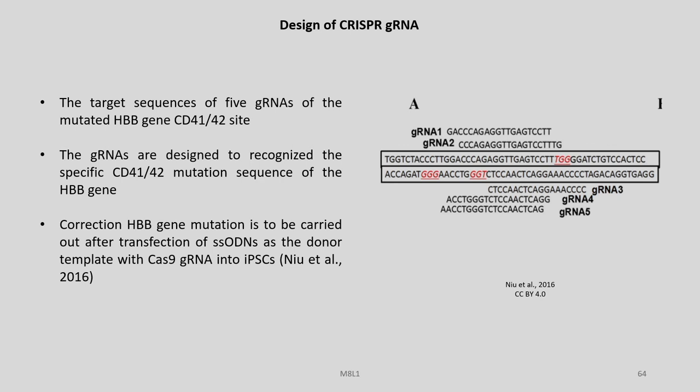The CRISPR guide RNA designing plays a crucial role. Five guide RNAs — gRNA 1, 2, 3, 4, 5 — were designed for specific positions, and these are the target sequences of the five gRNAs of the mutated HBB gene CD41/42 site. The gRNAs are designed to recognize the specific mutation sequence of the HBB gene. The correction of HBB gene mutation is carried out after transfection of SSODNs as the donor template with Cas9 guide RNA into iPSCs.